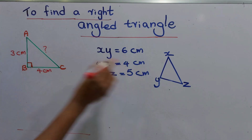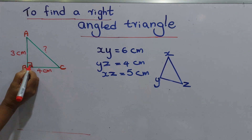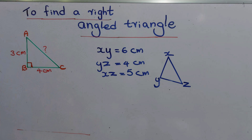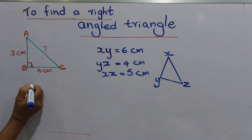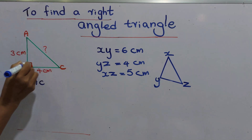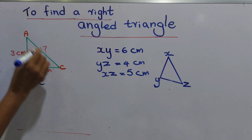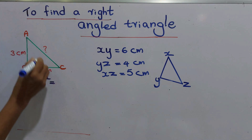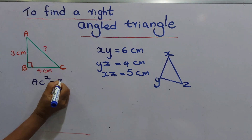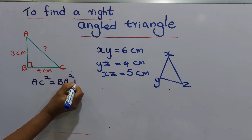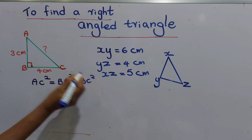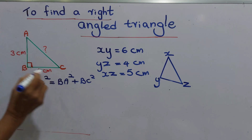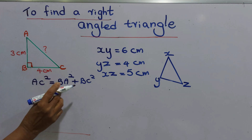When you see this triangle it clearly shows there is a right angle. When we apply the Pythagoras relationship, we write AC squared — that is the side in front of the right angle, the longest side — equals BA squared plus BC squared. This is the Pythagoras relationship.